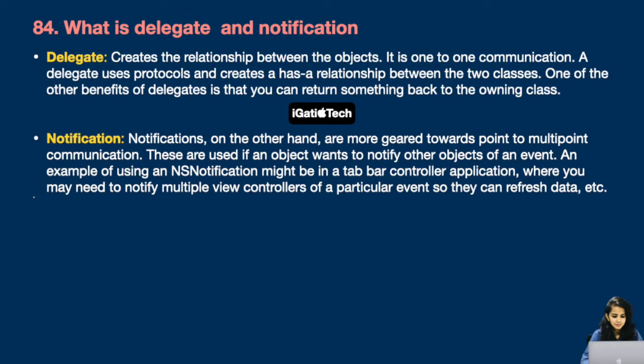Question number 84: What is delegate and notification? A delegate creates a relationship between objects — it is one-to-one communication. A delegate uses protocols and creates a relationship between two classes. One benefit of delegates is that you can return something back to the owning class. Notifications, on the other hand, are more geared towards point-to-multipoint communication, used when an object wants to notify other objects of an event. For example, in a tab bar controller application you may need to notify multiple view controllers of an event so they can refresh data.